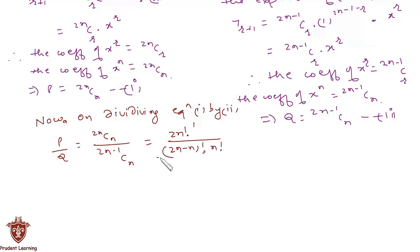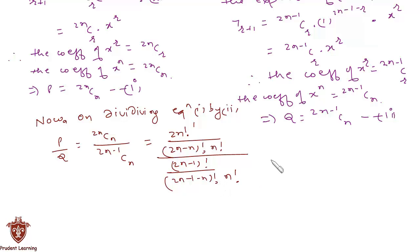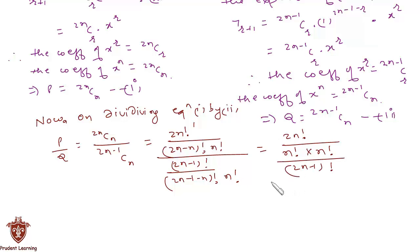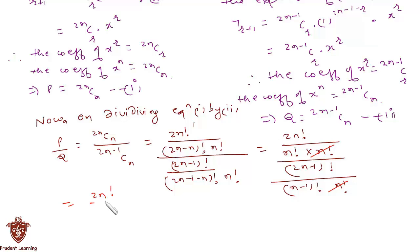This can be written as 2n factorial upon n factorial times n factorial, divided by 2n minus 1 factorial upon (2n minus 1 minus n), which is (n minus 1) factorial, times n factorial. Here we can cancel n factorial and we are left with 2n factorial upon n factorial times (n minus 1) factorial, over 2n minus 1 factorial.